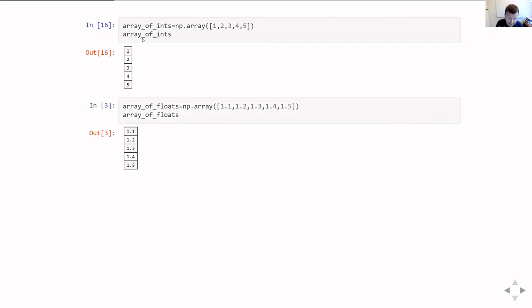If that list, instead of containing integers, contains floating point numbers, it would make an array of floating point numbers. And we'll discuss a bit later on about how you can work out what the data type of each element is.